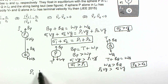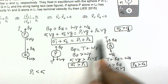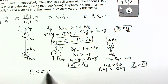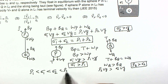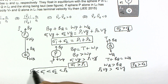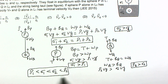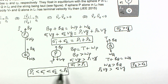Now we can establish the ordering of all four densities. Since σ1 > ρ1 and ρ2 > σ2, and combined with σ1 + σ2 = ρ1 + ρ2, we can conclude the density ordering. The larger and smaller values among σ1, σ2, ρ1, ρ2 can be identified from these inequalities.